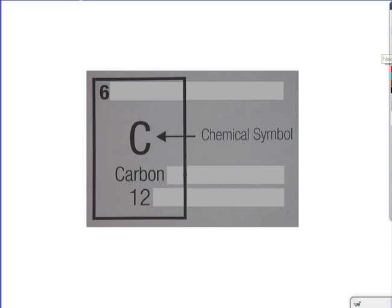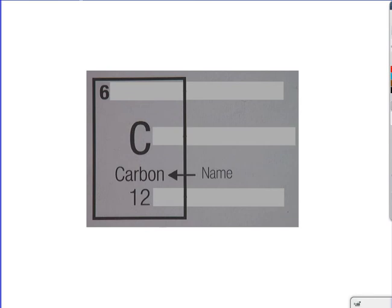Right here, this is the chemical symbol. Chemical symbols will always be listed with a capital letter, a single one, or a capital letter and a lowercase letter. Sometimes you'll notice that the chemical symbol starts with the same letter as the actual chemical. In this case, chemical symbol C for carbon.